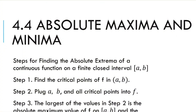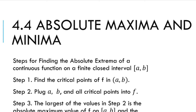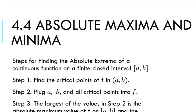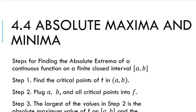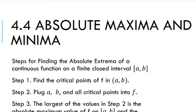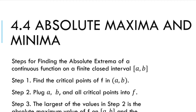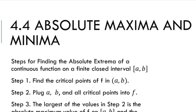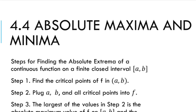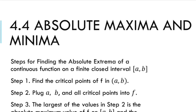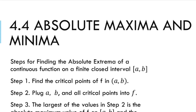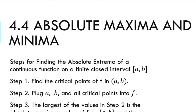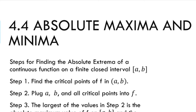Absolute maxima and absolute minima. By definition, an absolute maximum value on a graph is the point that is highest on the graph — the largest f(x) value. Similarly, the absolute minimum is the lowest, the smallest.